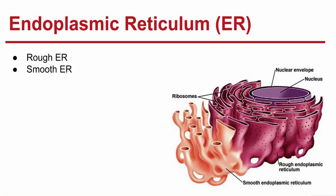Next we have the endoplasmic reticulum, also known as the ER. It is an internal membrane system. The ER is the site where lipid components of the cell membrane are assembled, along with proteins and other materials that are exported from the cell. Rough ER is endoplasmic reticulum dotted with ribosomes, and it is involved in the synthesis of proteins. Smooth ER doesn't have ribosomes — it's a collection of enzymes that perform specialized tasks, including the synthesis of membrane lipids and the detoxification of drugs. Liver cells contain large amounts of smooth ER because they're most involved in drug detoxification, while the pancreas has a lot of rough ER because it is involved in producing enzymes and proteins.